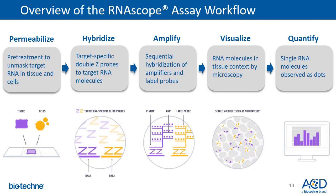Here is an overview of the RNAscope workflow. The RNAscope methodology starts with a pre-treatment step, followed by probe hybridization and signal amplification as described previously. At the end of the assay, RNA molecules can be visualized under the microscope as punctate dots, which can then be quantified. This quantification step is the part we are going to be focusing on during today's webinar.